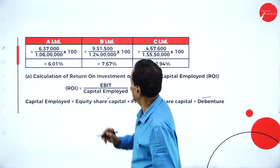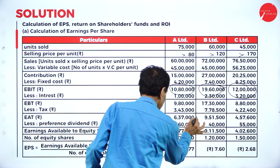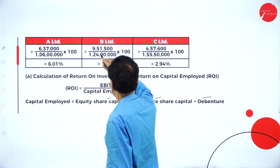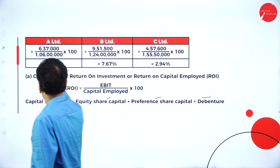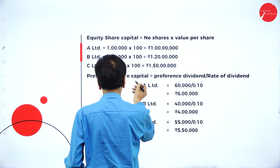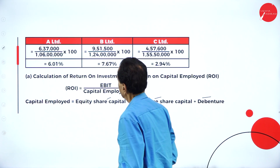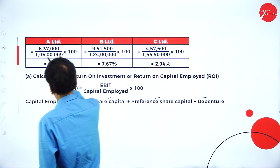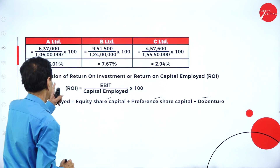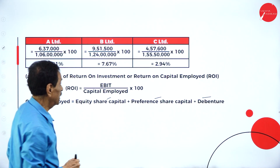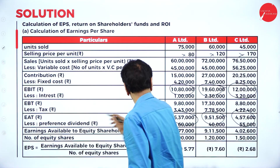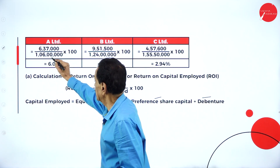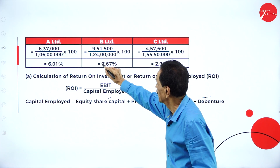Return on shareholders fund: earning after taxation divided by shareholders fund. A Limited: 6 lakh 37,000 divided by shareholders fund (1 crore + 6 lakh = 1 crore 6 lakh). B Limited: 9 lakh 51,500 divided by 1 crore 20 lakh + 4 lakh = 1 crore 24 lakh. This works out to approximately 6.01 for A Limited.